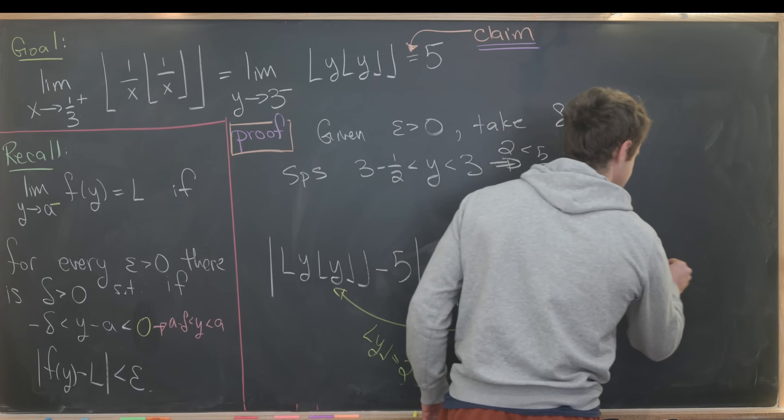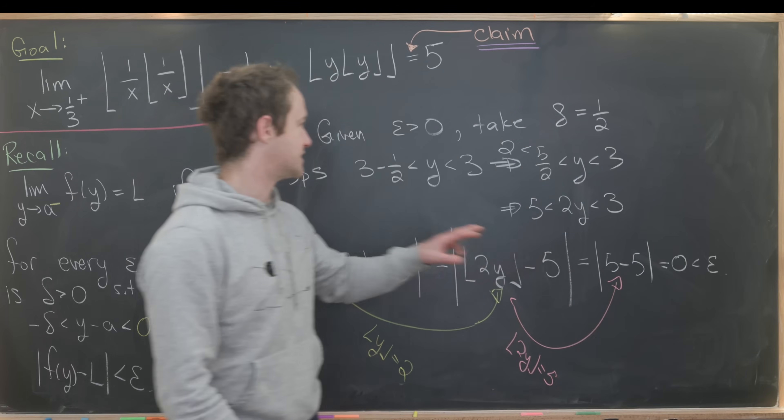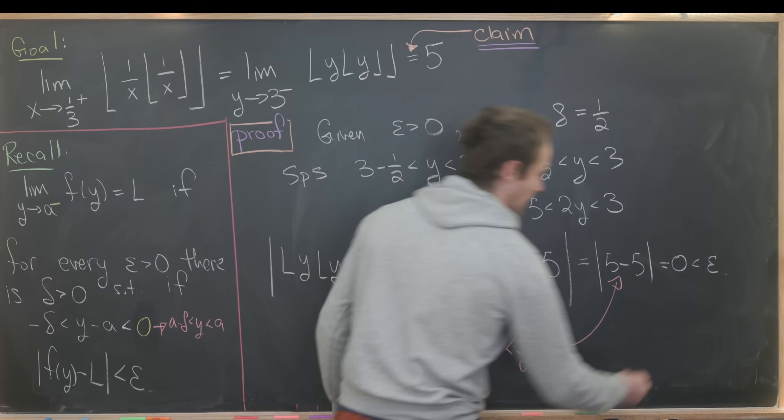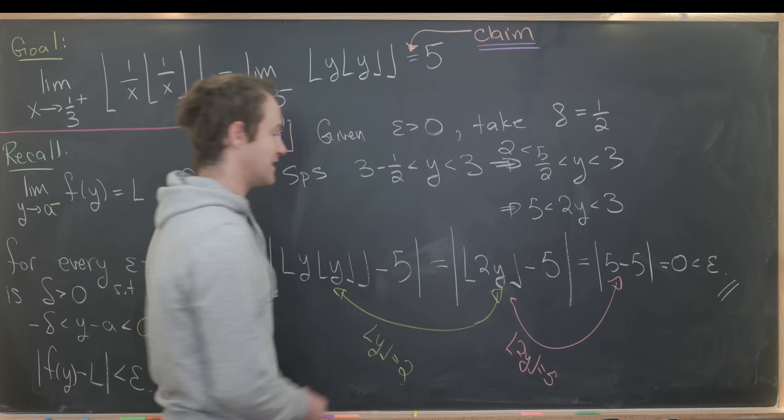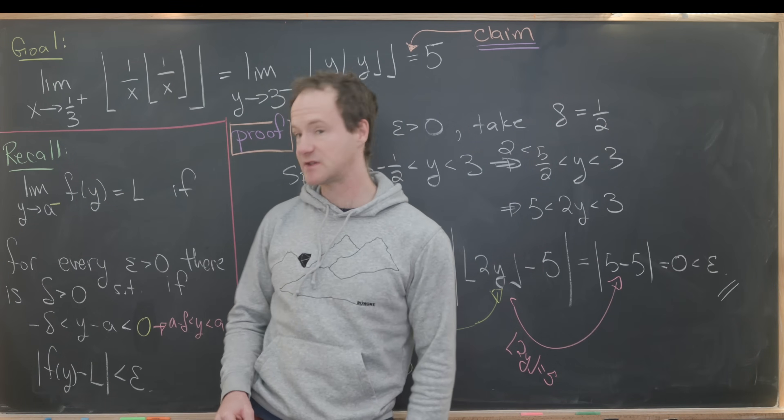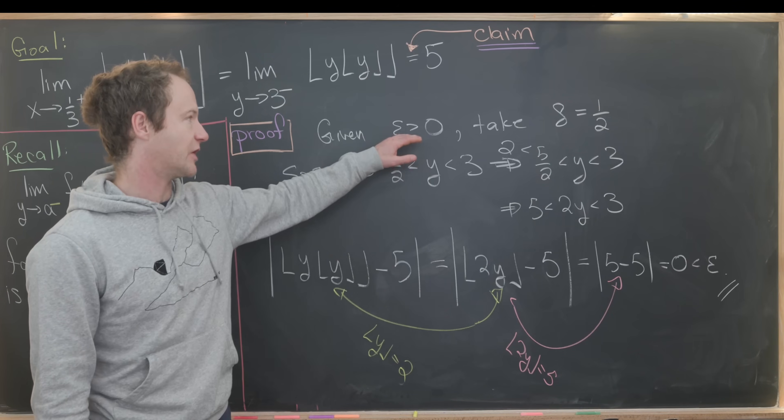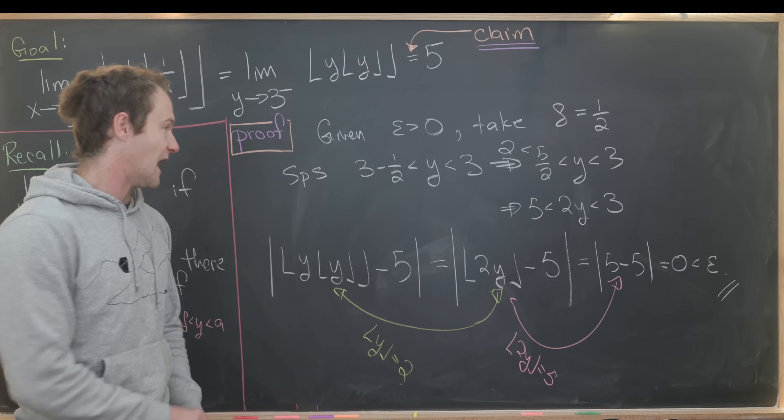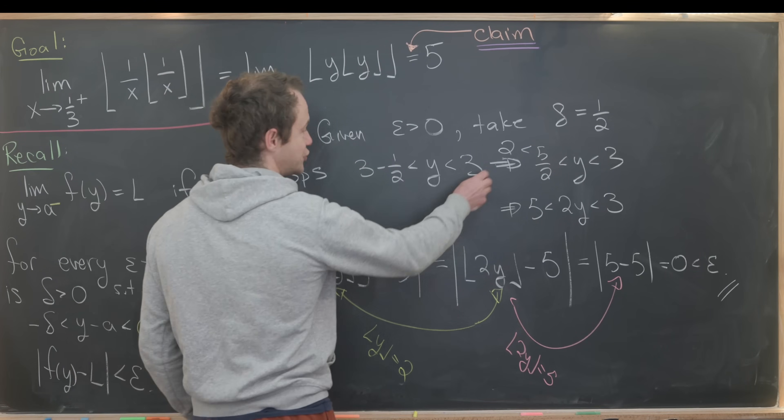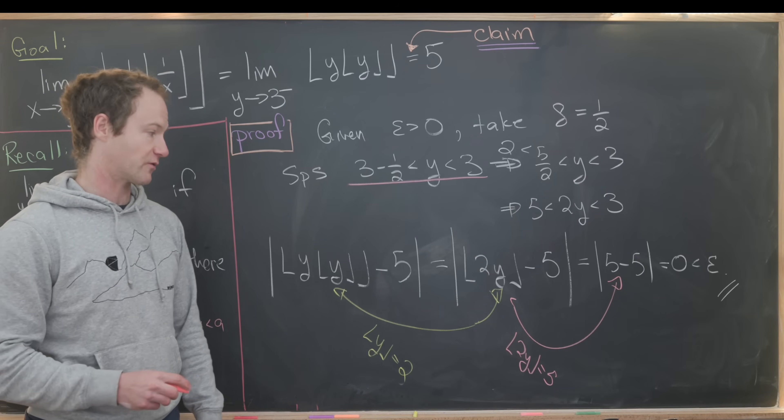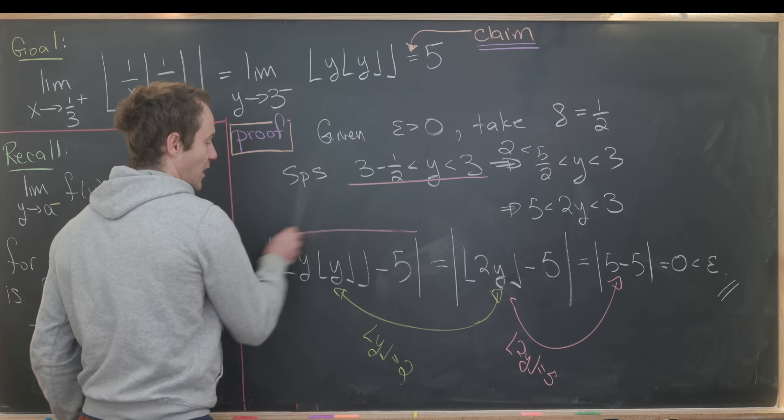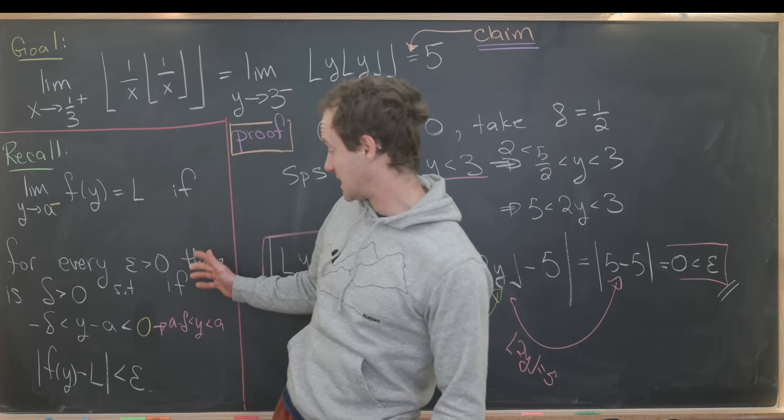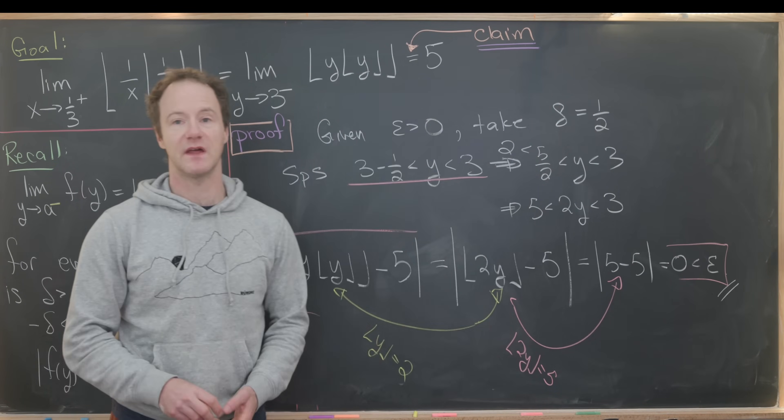But now 5 minus 5 is equal to 0. Since epsilon was chosen to be anything bigger than 0, that's most definitely less than epsilon, which is exactly the condition that we needed for this limit to exist. Let's look carefully at what we did. Given an arbitrary epsilon bigger than 0, we took a value of delta, and then we saw that assuming y lived within this appropriate range, f(y) minus the value of the limit was less than epsilon. That follows exactly what we needed, and that's a good place to stop.